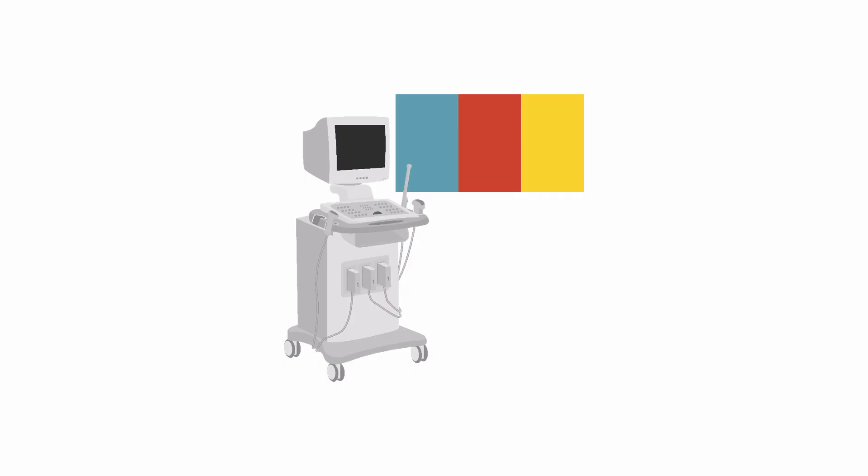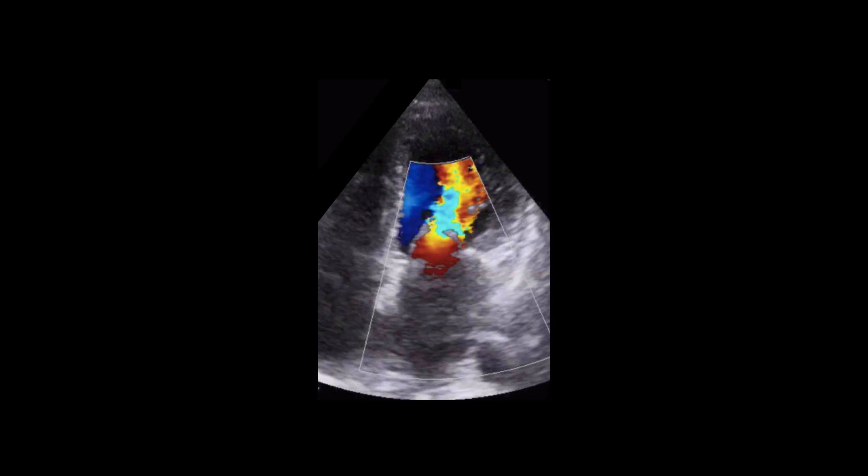When using colour flow Doppler in the presence of mitral stenosis, images such as these are usually seen with flow accelerating towards the valve, followed by a lengthy jet passing from the valve and spreading out towards the apex of the left ventricle.